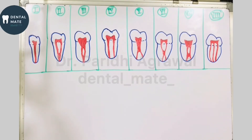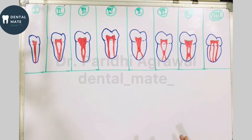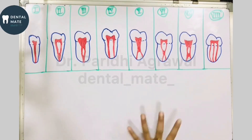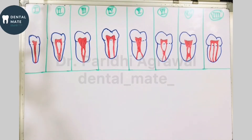In the previous video we discussed the basic terminologies related to the pulp cavity and the root canals. In this video we will be talking about the various types of root canal morphology which are commonly seen. Various models and tools have been studied, and the most commonly found morphologies were classified by various scientists.